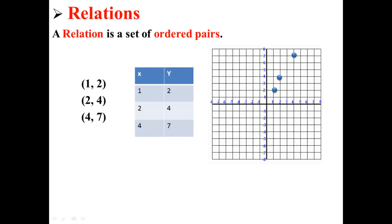In a previous lecture, I talked about relations. A relation is a set of ordered pairs. For example, here we have three ordered pairs: (1, 2), (2, 4), and (4, 7). We've graphed those xy coordinates on a coordinate plane.